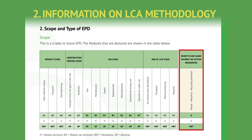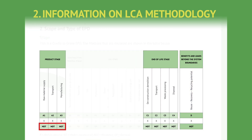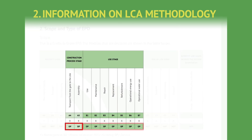Module D covers the net benefits and loads arising from the reuse of the product, or the recycling or recovery of energy from waste materials resulting from the construction stage, the use stage, and the end of life stage. In building product EPDs, A1 to A3, C and D modules are mandatory to be declared, with few exceptions, while A4 to A5 and B1 to B7 are optional.